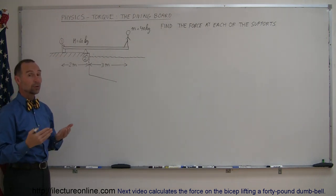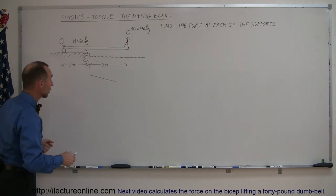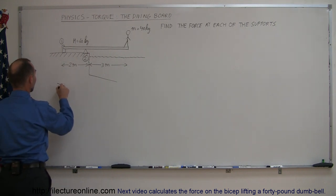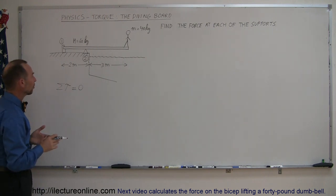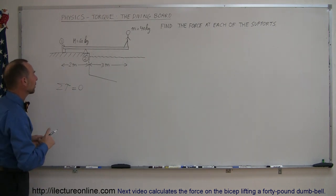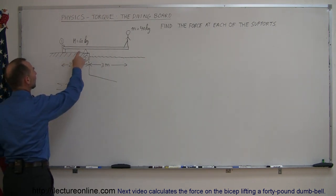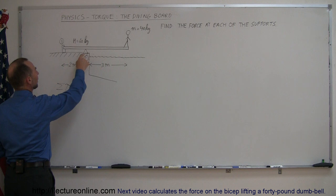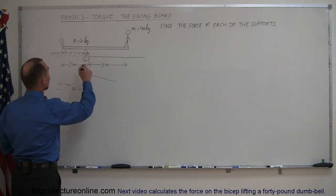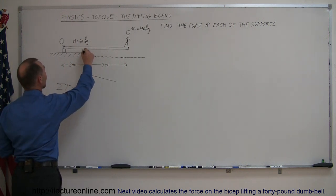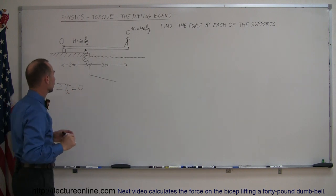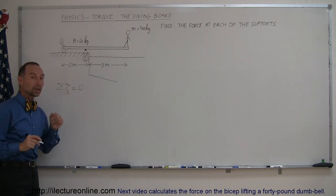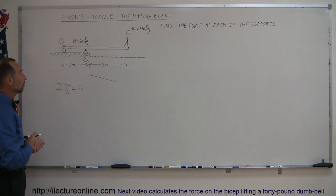How do we do that? We use the equation that the sum of all the torques adds up to zero, and in this case we need to find a pivot point. We can either pick the pivot point here or there. I'm going to start by picking this as my first pivot point — torque around point number 2. If I add them all up I'll get zero.